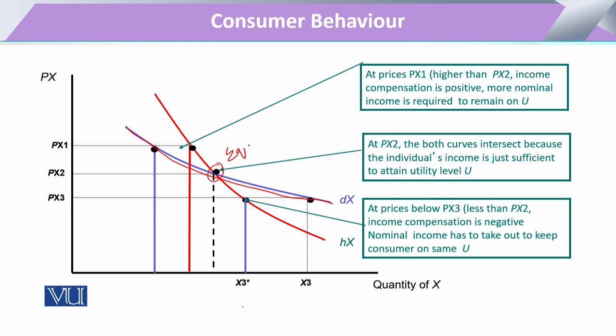If the price of commodity X is higher than before, the consumer shifts backward and reduces demand. If the price of X falls, the consumer increases demand and moves rightward. When showing this as the Hicksian demand curve, the direction of change in quantity demanded is the same, but the magnitude may differ. This magnitude reflects that in Marshallian, the effect of change in quantity demanded is due to both income effect and substitution effect.